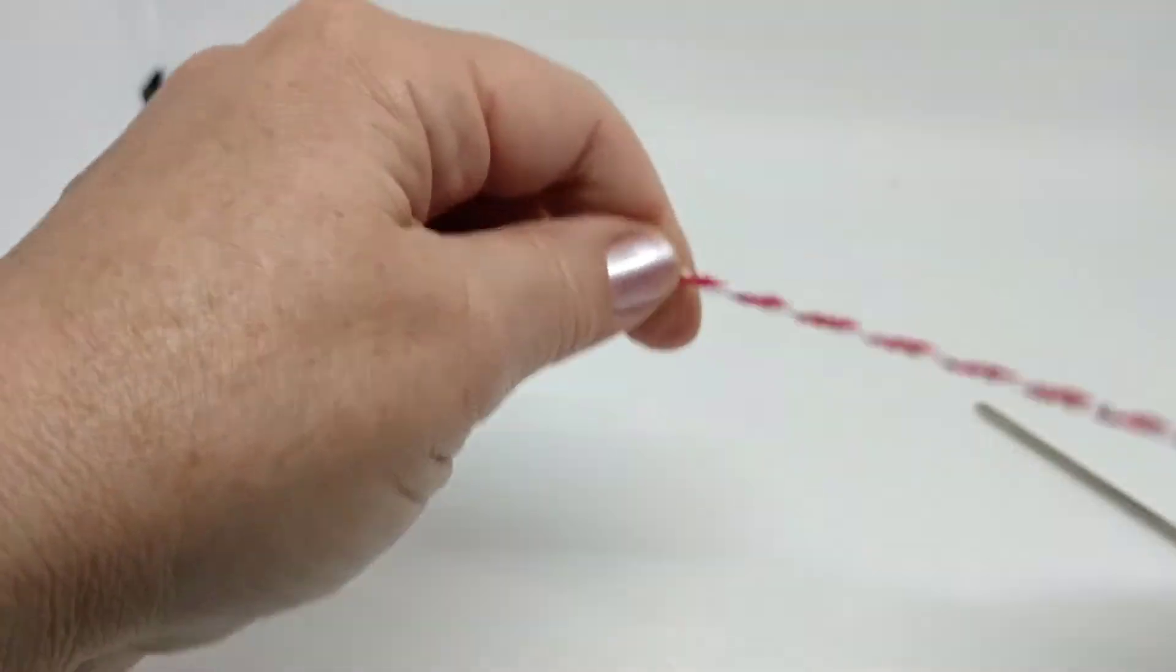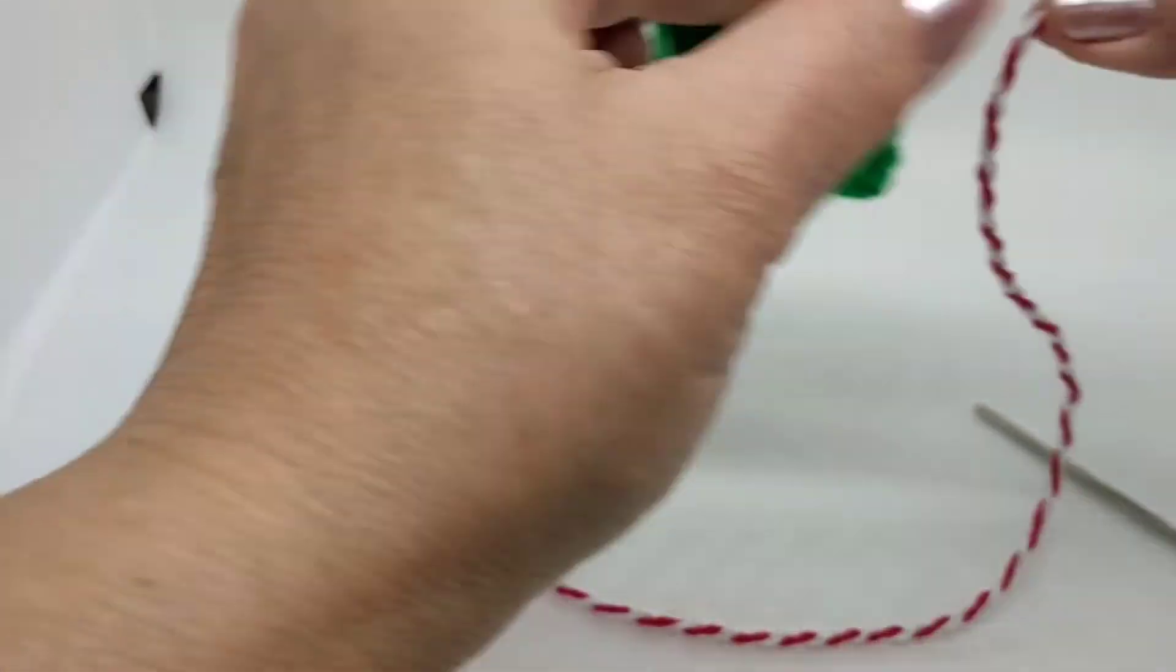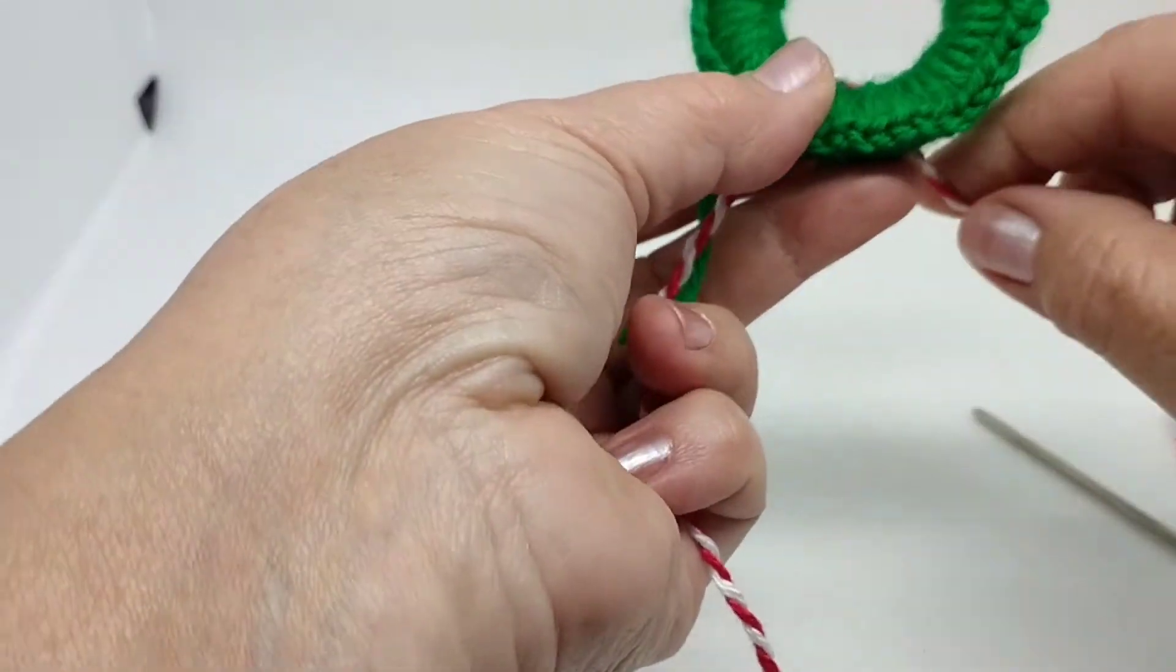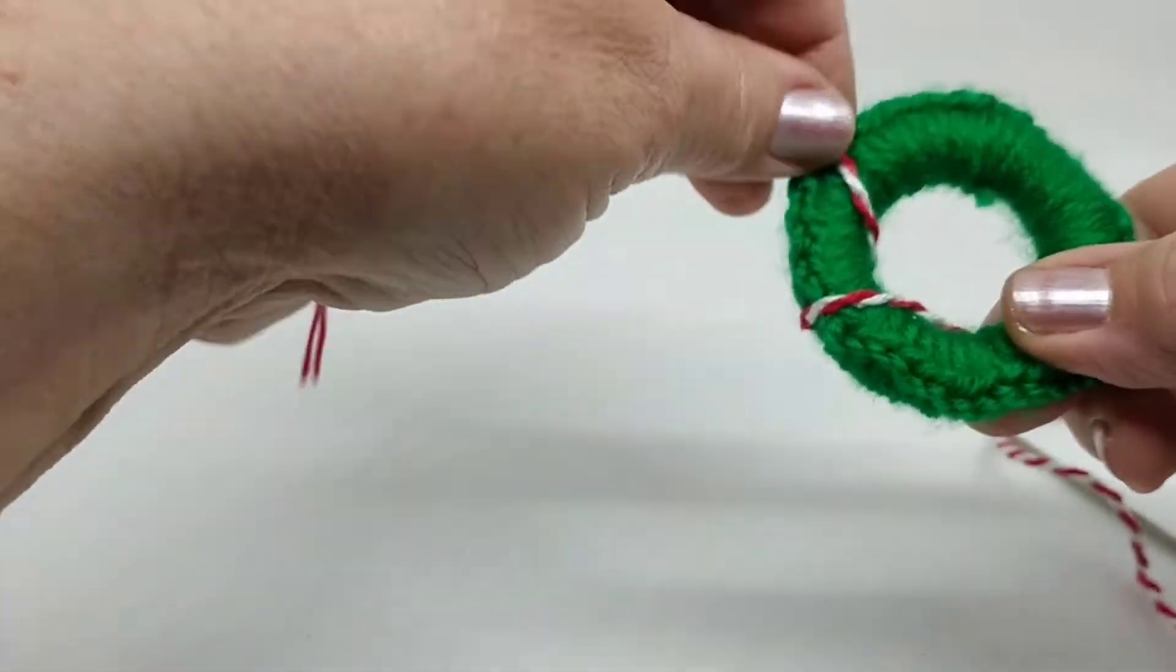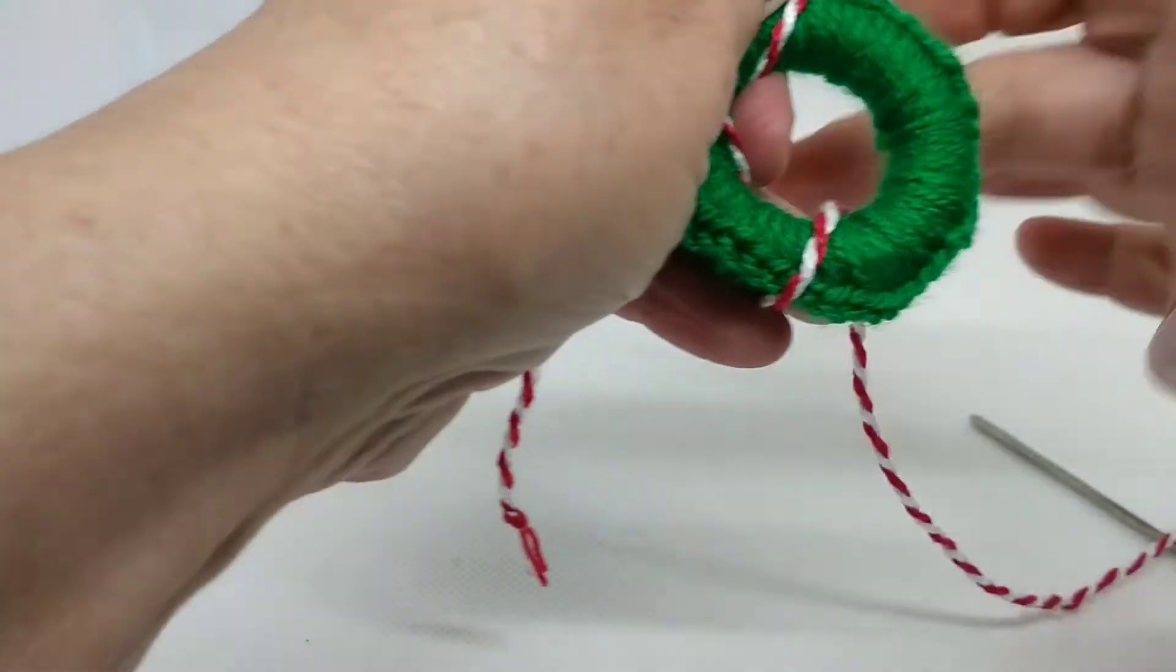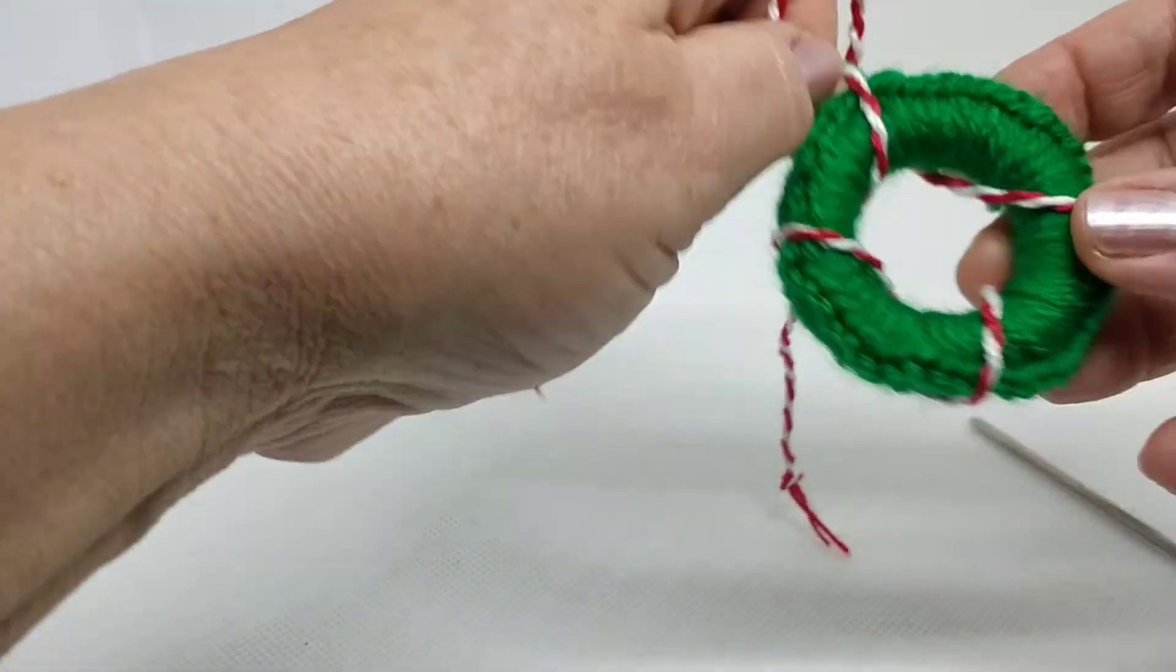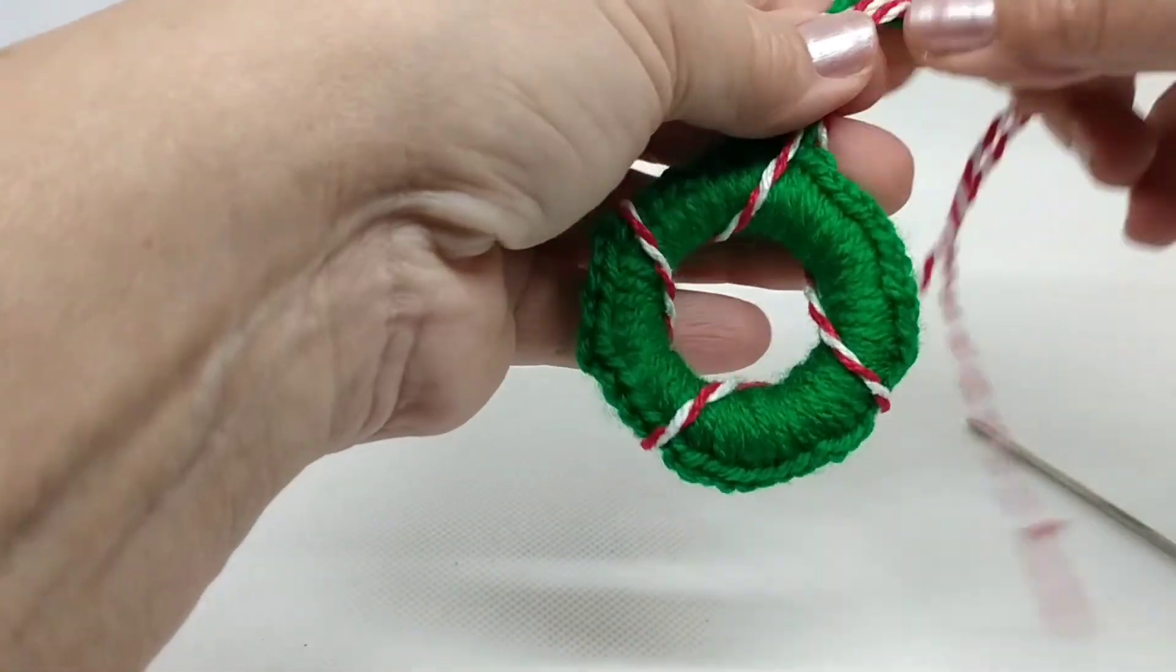Y ahora con este cordón lo vamos a pasar alrededor de nuestro aro. Vamos a dejar aquí un poquito y lo vamos envolviendo, más o menos de esta forma. Y lo traemos de nuevo al centro. Y esta parte nos va a servir luego para colgar la corona.